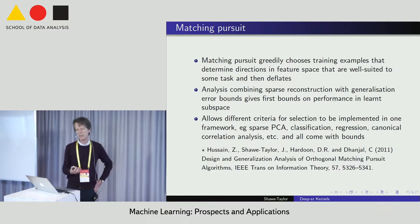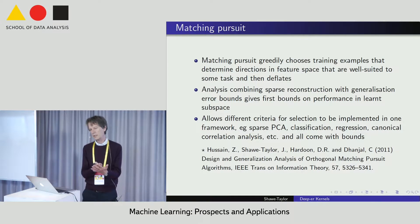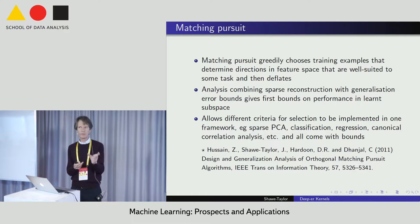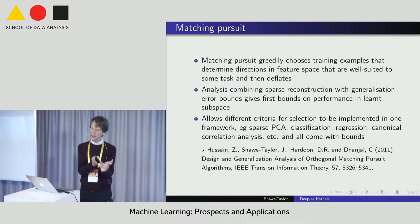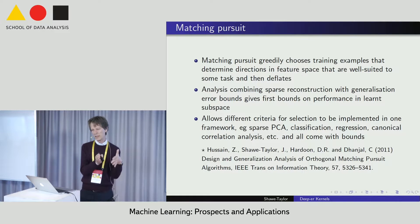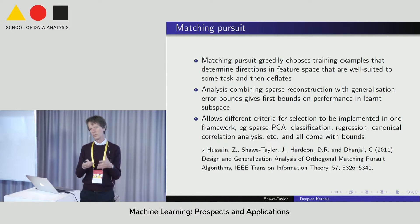It also allows different criteria to be implemented in one framework — sparse PCA, classification regression, canonical correlation analysis, and so on. All of them come with bounds. The idea is that the representation is constructed from a subset of examples, so we can use sparse reconstruction results that guess the correct indices of examples to create the representation. Under that guessing the performance is good, then we simply do a union bound over all possible guesses.